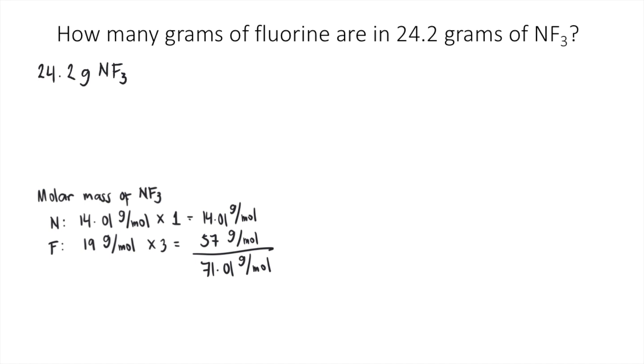14.01 plus 57, you will get 71.01 grams per mole. And this is the molar mass of NF3. So that means for every one mole of NF3, that's equivalent to 71.01 grams. And then you can plug that into our solution. So one mole of NF3 is equivalent to 71.01 grams of NF3. So the grams of NF3 cancels out.